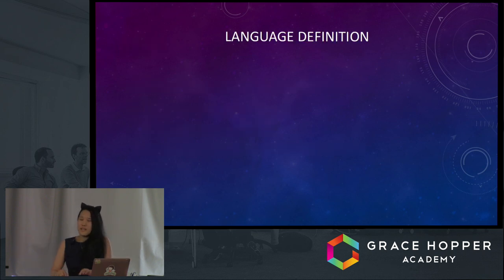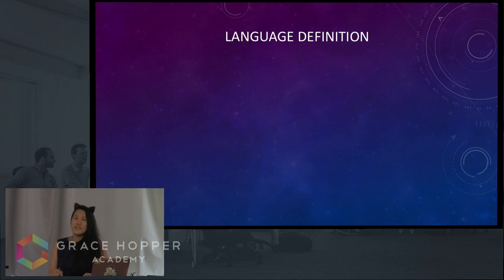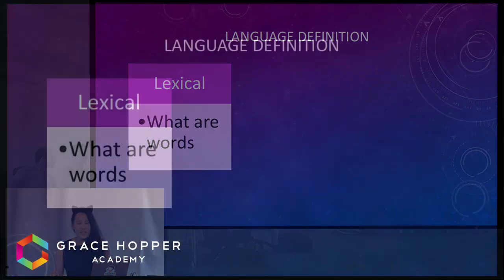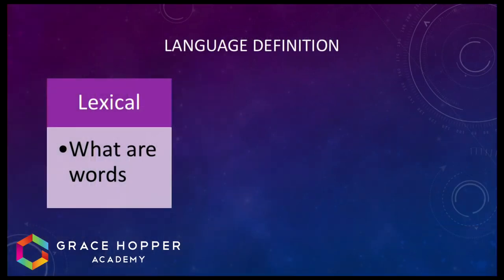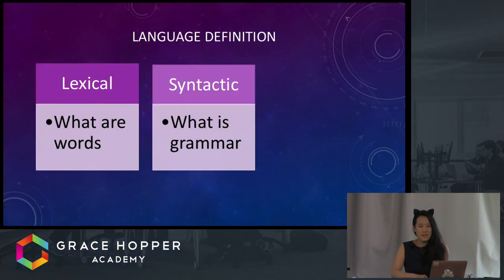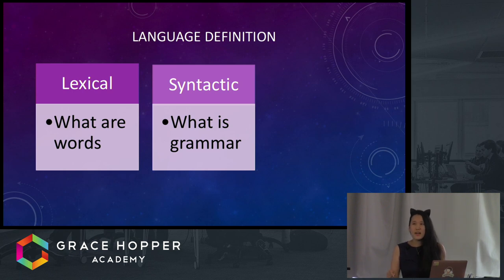You want to start by defining rules at three different levels. The first one is the lexical level — what determines what a word is? What are some legal data types, for example, strings or integers? At the syntactic level, what are legal and grammatical combinations of words? For example, what makes a valid expression or a valid statement?